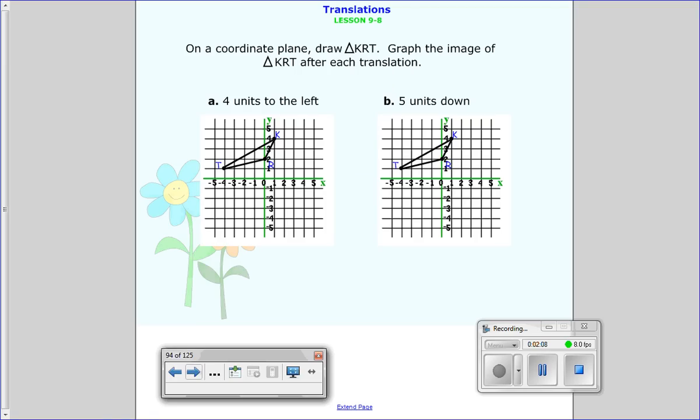Alright, so again we can do this one. On a coordinate plane I drew triangle KRT already for us, but now we have to draw the image. You can do A together and then you'll have B on your own. Part A says move it 4 units to the left, so everything moves 4 units to the left. Starting with K, I'm going to do mine in red. 4 units to the left, 1, 2, 3, 4, there's K. T is going to be off the graph so we'll do our best here, 1, 2, 3, 4. That is about where the new T is going to be.